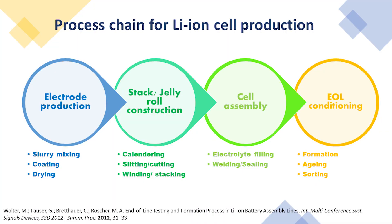Let's break down cell production into four sections. Step 1: Electrode production — we make the electrode slurry, coat them on current collectors, and then dry them. Step 2: Jelly roll construction — we press and cut the electrodes, weld the tabs, and wind the electrodes and separators together. Step 3: Cell assembly — we fill the cells with electrolyte and seal them. Step 4: End of line conditioning — where we do cell formation, aging, and grading the cells.